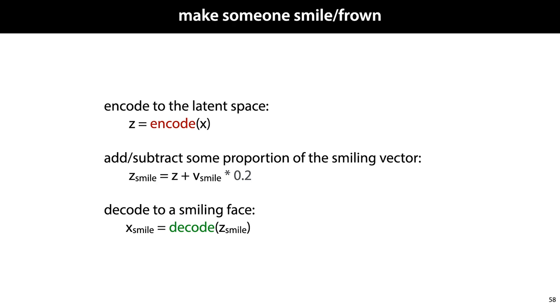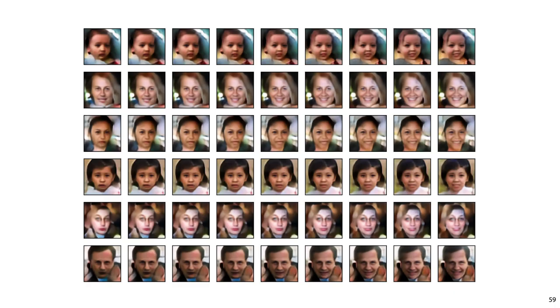A picture of the original person, but smiling. Here's what that looks like for some of our data. The reconstruction of the original image is in the middle. To the right is what happens when we push people along the smiling vector. And to the left is what happens when we subtract the smiling vector.